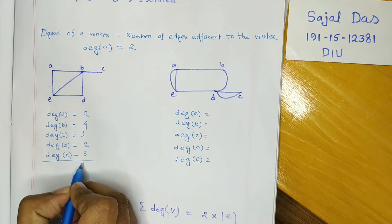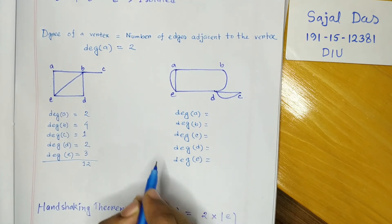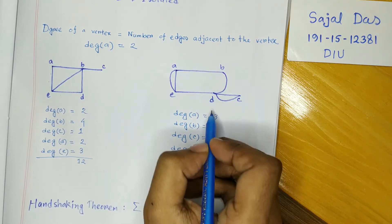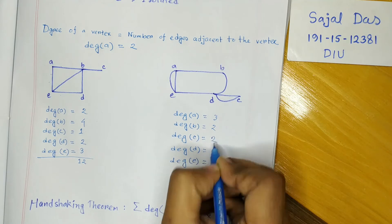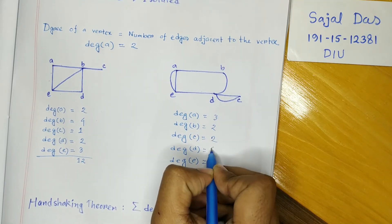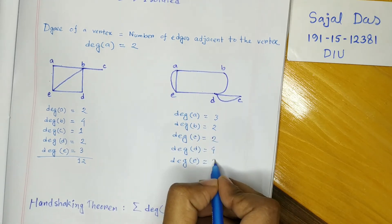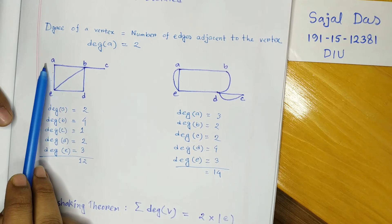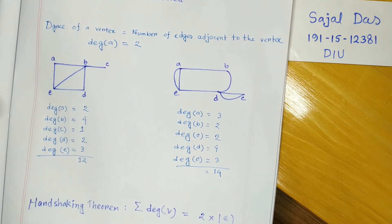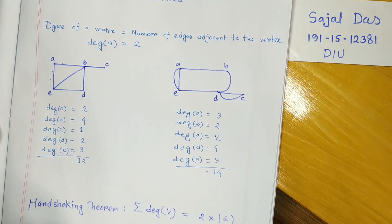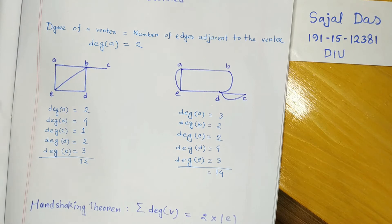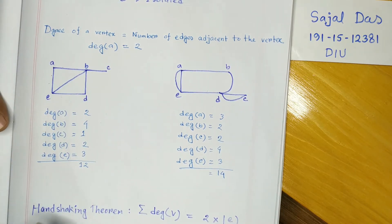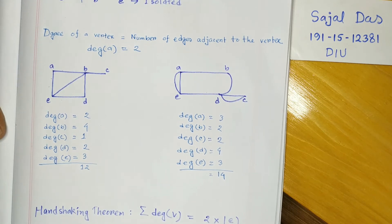The degree of e is 3, giving a total of 12 for that graph. For the second graph, a has 3, b has 2, c has 2, d has 4, and e has 3, giving a total of 14. This graph has 6 edges and the total degree is 12 — notice that the total degree equals double the number of edges.